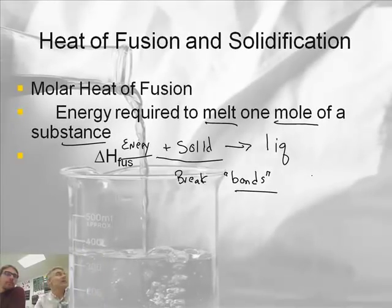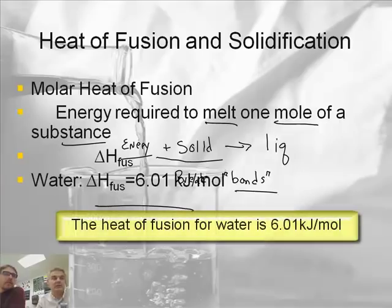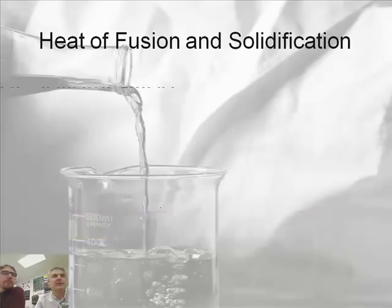By the way, the unit for that, or the symbol, is delta H fus, for fusion. And the value for water, the one everyone talks about, is 6.01 kilojoules per mole. And you're going to use that number, so you might want to jot it down somewhere. A little table or something like that.